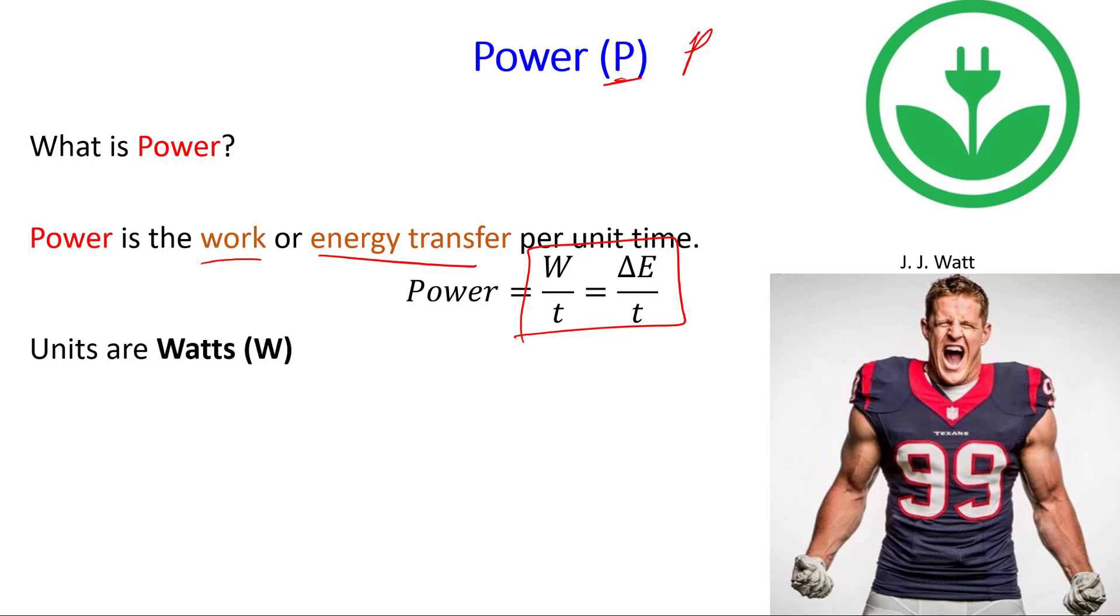So the units for power are going to be watts and the abbreviation is a capital W. One watt is equal to one joule per second.